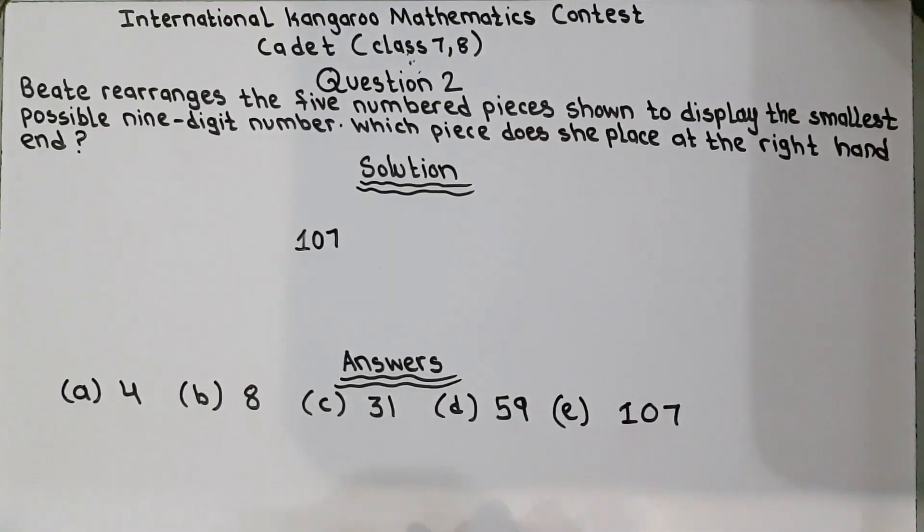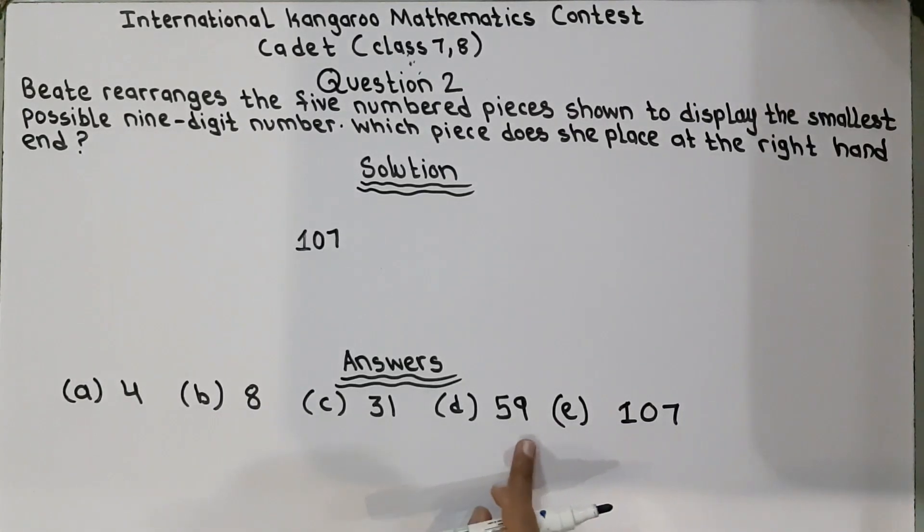Now we will choose the smallest number between these. So in these 4, the smallest number is 4. So 4. No, no. We will not write 4. We will write 3 because 3 is smaller than 4.